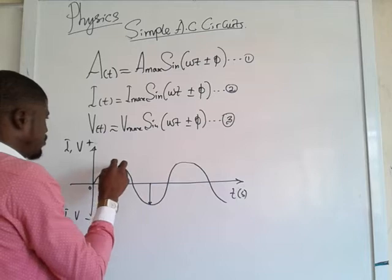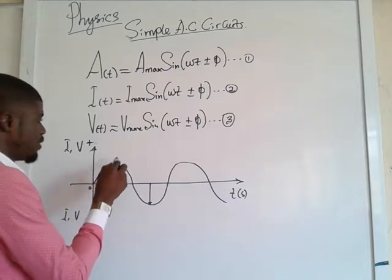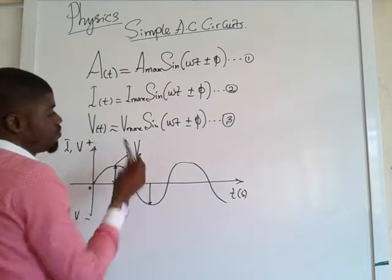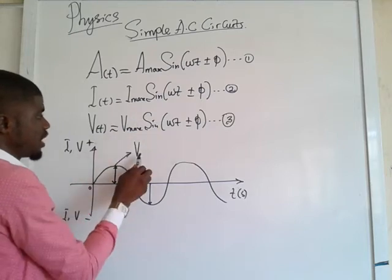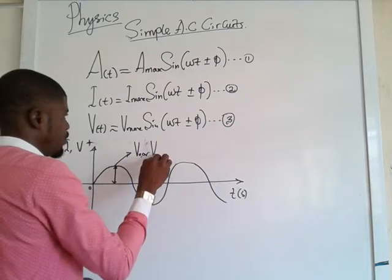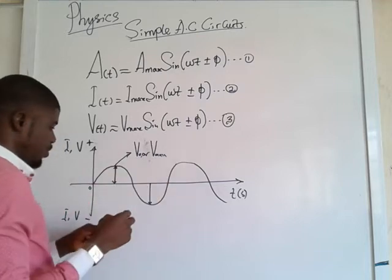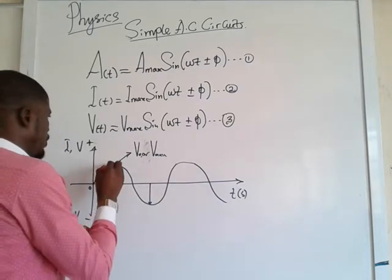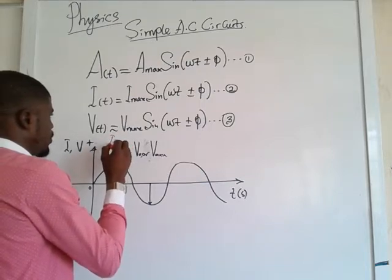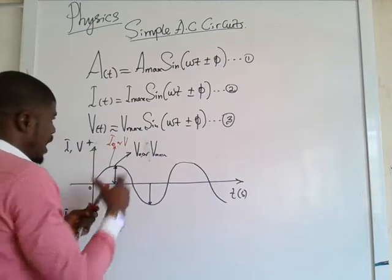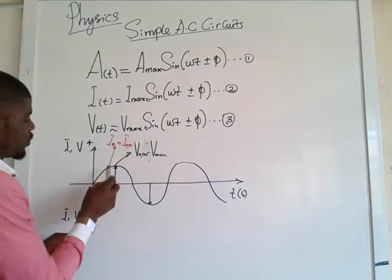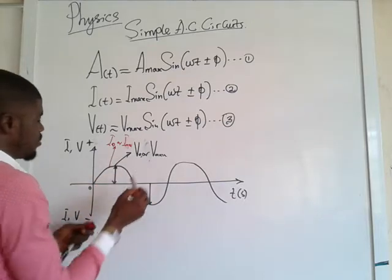I want to explain the meaning of I_max sin(ωT ± φ). This is the place where you have the amplitude of the wave. The amplitude of the wave is equivalent to the voltage. In some textbooks, I_max is written as V₀ or V_maximum. Here you also have your maximum current, written as I₀ or I_maximum. So this is where you have your maximum current and your maximum voltage.